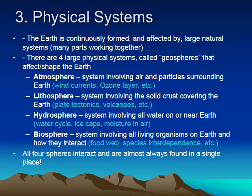The third geosphere is the hydrosphere — the system involving all the water on or near the Earth, with examples like the water cycle, the polar ice caps, and moisture in the air. The fourth is the biosphere, which refers to all living organisms on Earth and how they interact. Examples include food webs like predator versus prey, and species interdependence — such as the remora fish, which attaches to a shark's belly and eats scraps from its mouth. All four spheres interact together, like snow on a mountain melting into a river and causing erosion of the riverbed — that's the hydrosphere and lithosphere interacting.